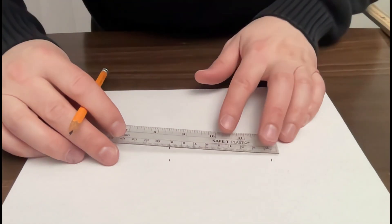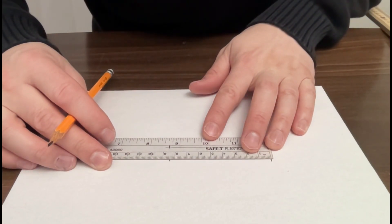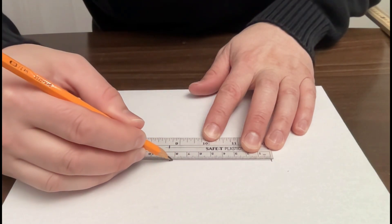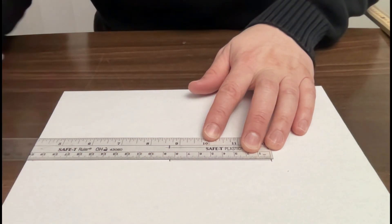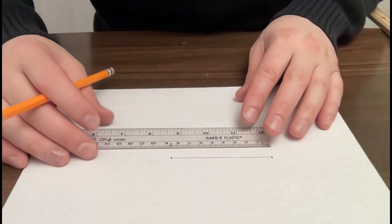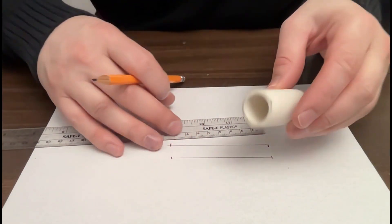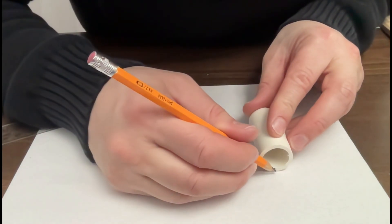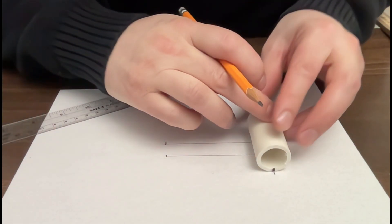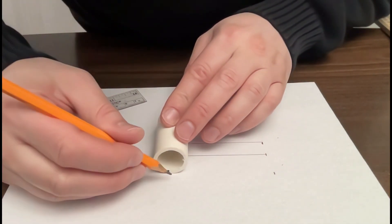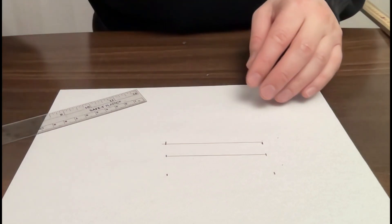We don't want to do it just once though. We want to repeat this process multiple times because there is expected to be error in this type of measurement for sure. There was error in the diameter measurement as well. But in this case we expect there to be quite a bit more error because of slipping of the cylinder and things like that.